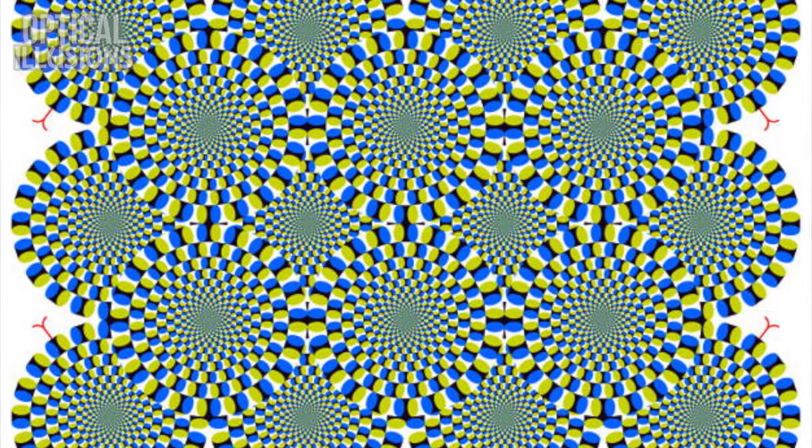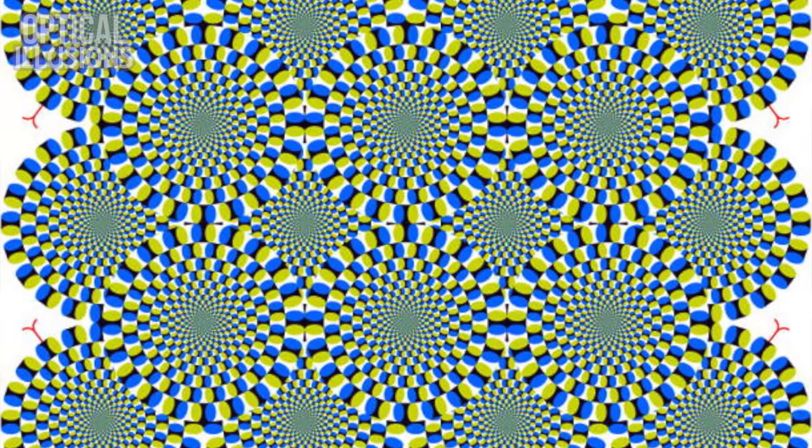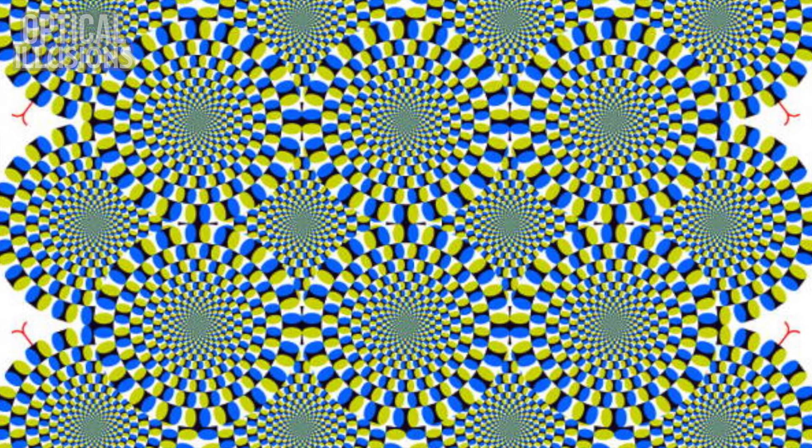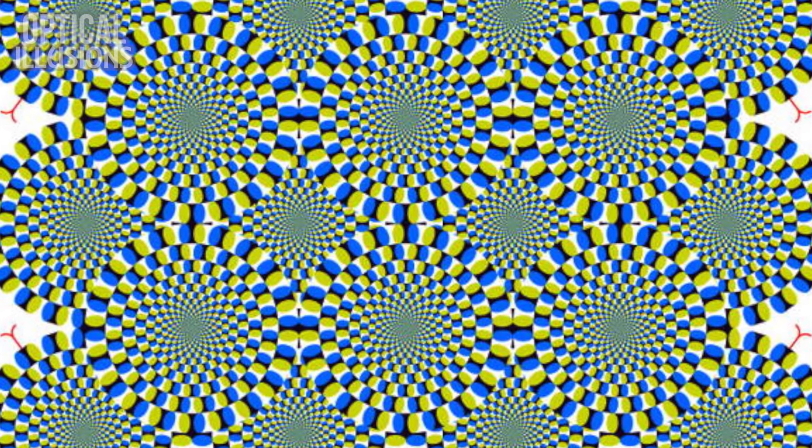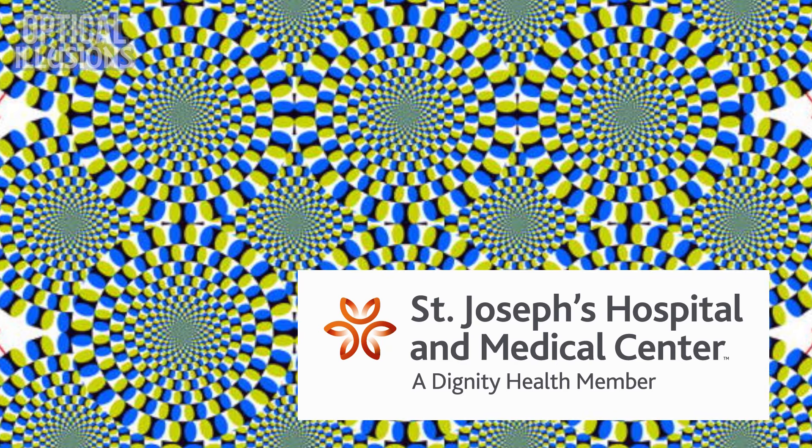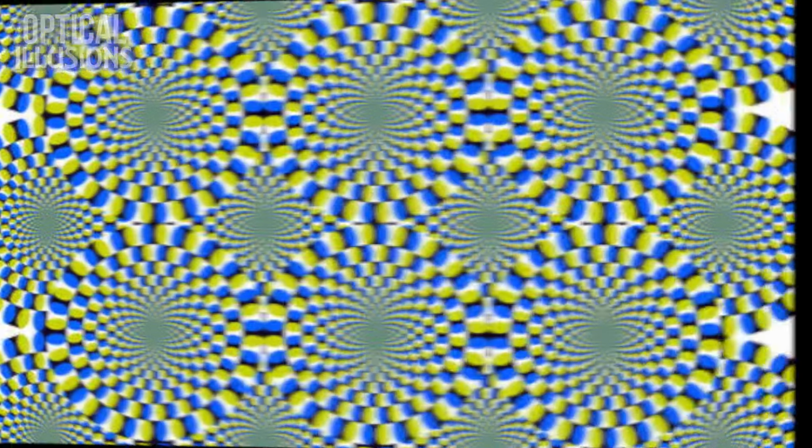If you focus steadily on the center of one circle, you'll notice that the image stops moving. This hypothesis was confirmed by a 2012 study from St. Joseph's Hospital in Phoenix, Arizona. Not every illusion works the same way, but nearly every one reverse-engineers our biological presets.